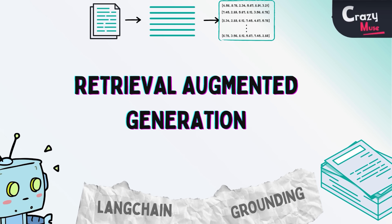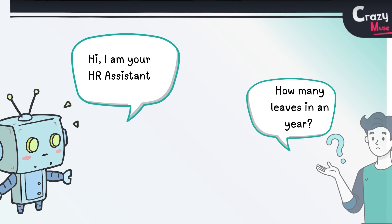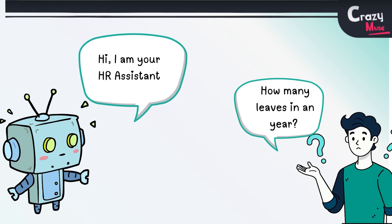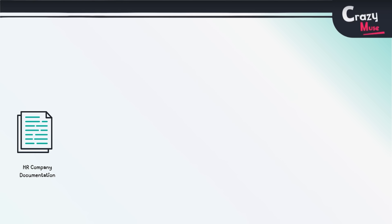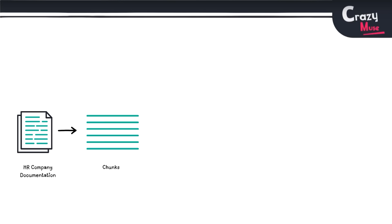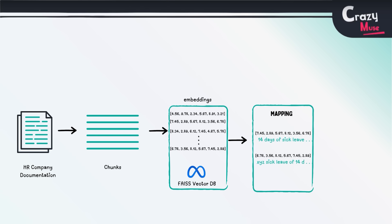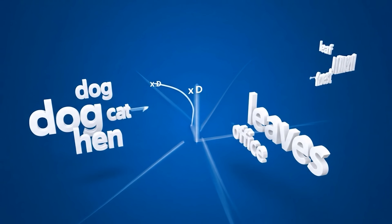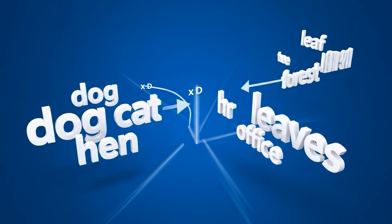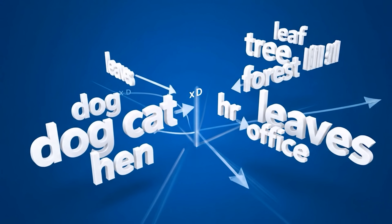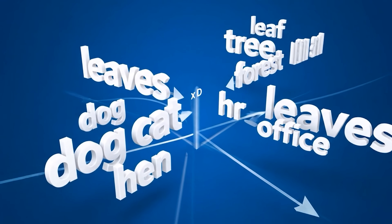One way to achieve this is through RAG, which is Retrieval Augmented Generation. Continuing from the example we were discussing — if we had an HR guidelines PDF, we would break it into chunks and convert those chunks into vector embeddings to make them searchable. The beauty of embeddings is that semantically similar chunks are close to each other in cosine space.